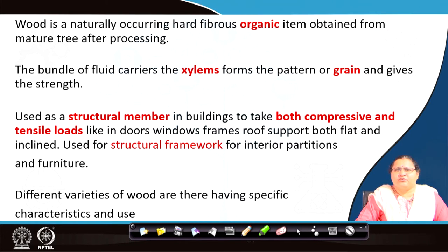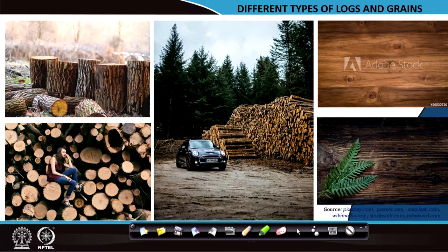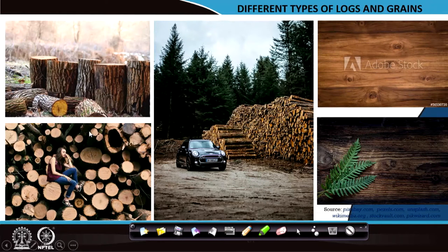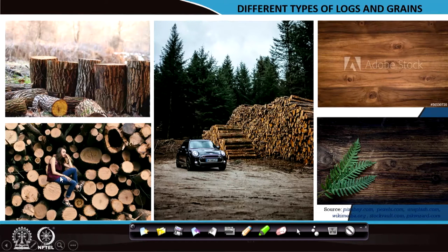Different varieties of wood have been seen because it is a naturally occurring material — they grow in different ways and have different characteristics, hence their use differs. Looking at some pictures, you see some big logs which have been cut into certain sizes and will be transported, as seen in the picture. Here are some logs where a human figure helps you understand the size of each log.